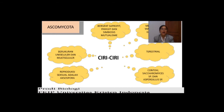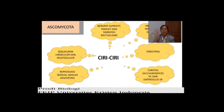Selanjutnya ada Ascomycota. Ascomycota, dia bersifat saprofit, ada yang parasit, dan simbiosis mutualisme — ada tiga. Kemudian dia memiliki hifa yang bersekat, berarti septa — kalau tidak bersekat aseptat, kalau bersekat septa — dan berinti banyak. Kemudian dia terestrial. Berukuran uniseluler dan multiseluler. Reproduksi seksualnya adalah askospora. Contohnya dari Ascomycota adalah Saccharomyces dan Aspergillus SP.